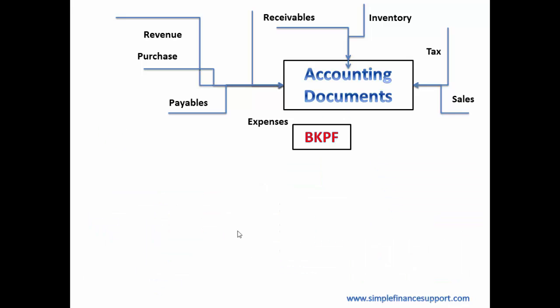Now let us look at how things are changing in the Simple Finance or S4 HANA architecture. As far as accounting documents are concerned, they are still posted from receivables, inventory, taxes, sales, revenue, purchases, payables, and all other business processes — the same way as before. They are still posted into the BKPF table and BSEG table, which are the header table and line item table. Along with this line item table, SAP is also providing a huge